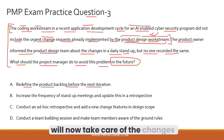Option B — increase the frequency of daily stand-up meetings and update this in a retrospective — is pointless. Daily stand-ups happen once a day; having them twice or three times is unproductive and defeats the purpose. The entire intent of a daily stand-up is to review the last 24 hours and plan for the next 24 hours. Just including the term 'retrospective' does not make this option correct.